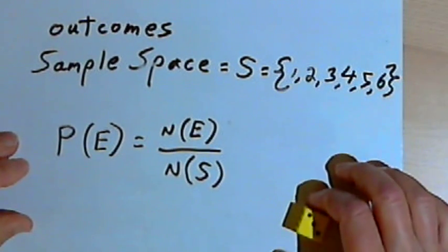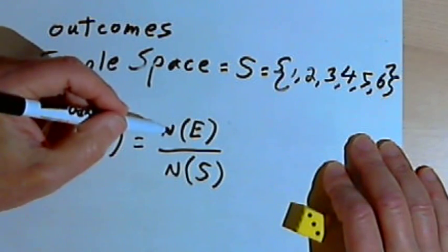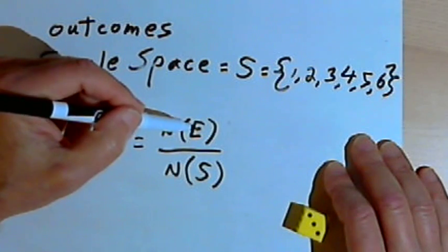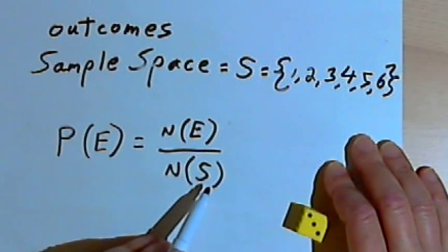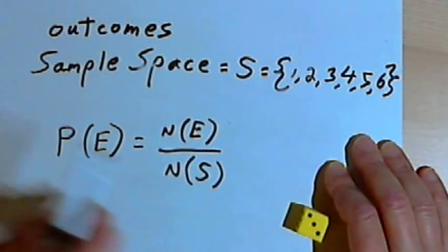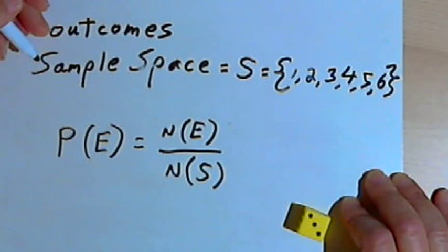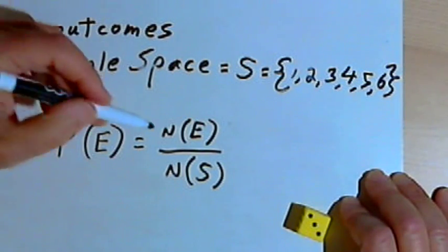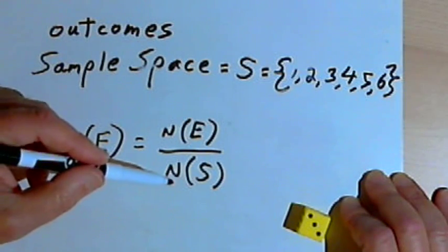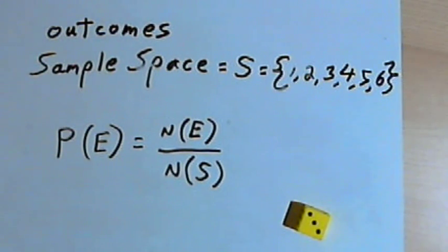The formula for probability is: the probability of an event E equals the number of elements in set E — the number of ways the event could happen — divided by the total number of different possible outcomes, which is the size of the sample space. That's the basic concept of probability. I'll have more videos with further examples, but the core idea is: take the number of ways an event can happen and divide by the number of possible outcomes. Okay, take care — I'll see you next time.